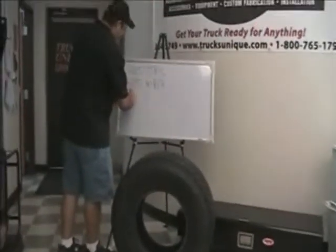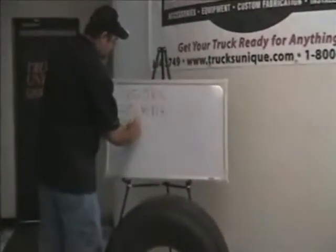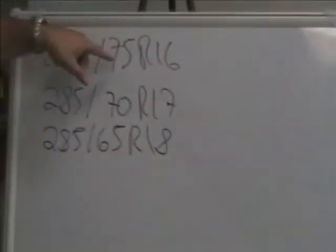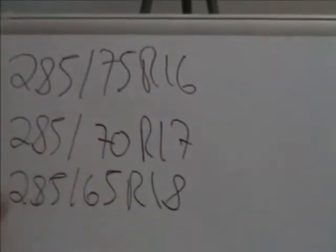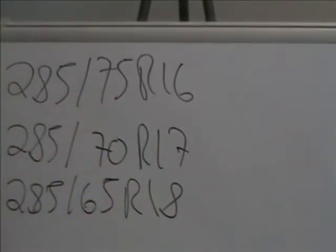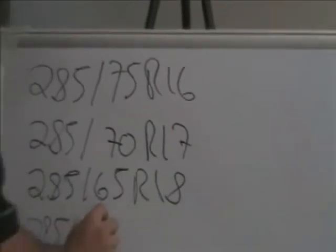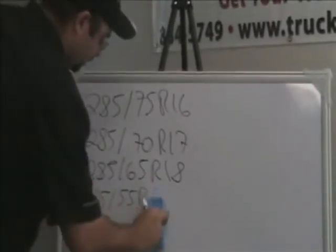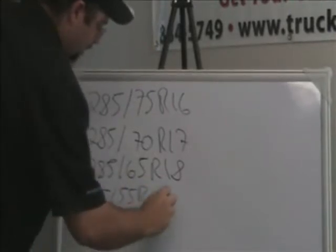So you go up to a 285, 18, so it would be a 285, 65, R18. So basically, as you can see, the number just changes, and it's because this is the percentage of the sidewall, and when you go to a bigger wheel, your sidewall has to be shorter. So that's why this number gets smaller, just like a 20 would be a 285, 55, R20.